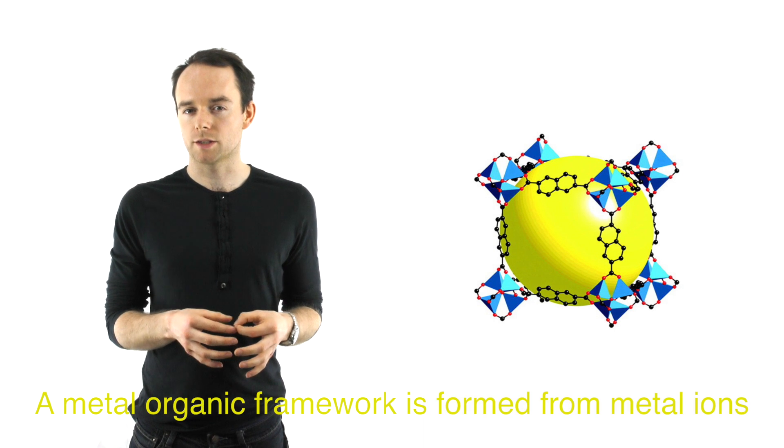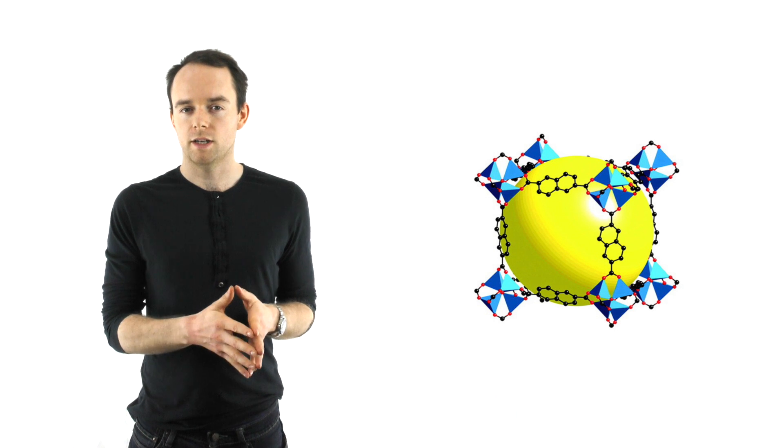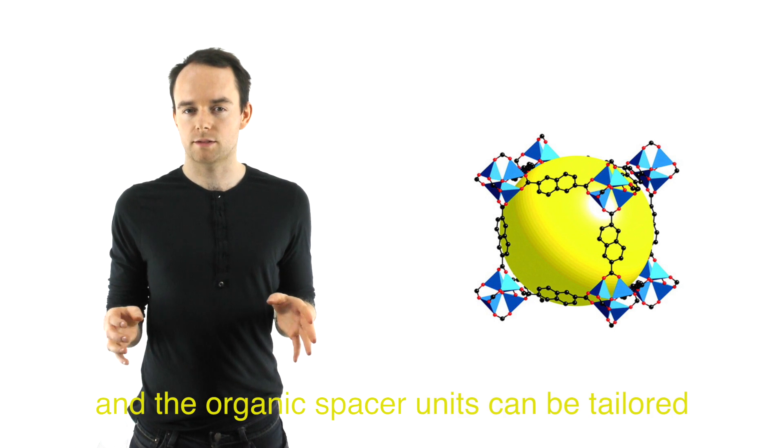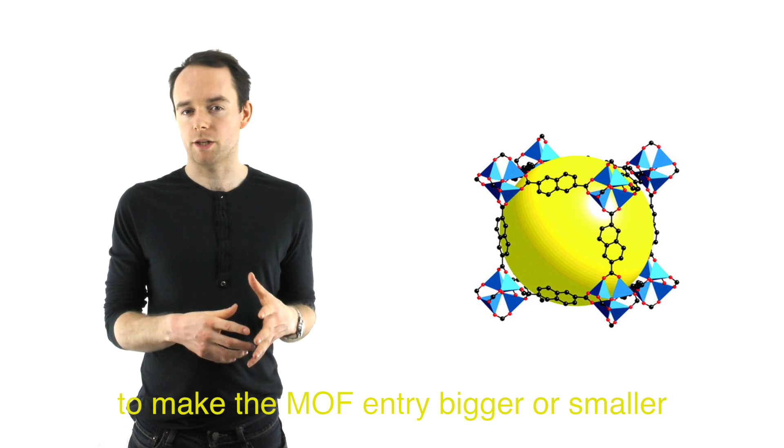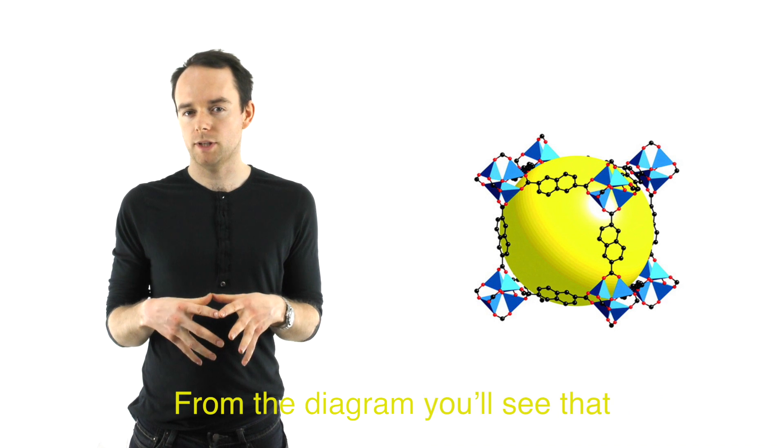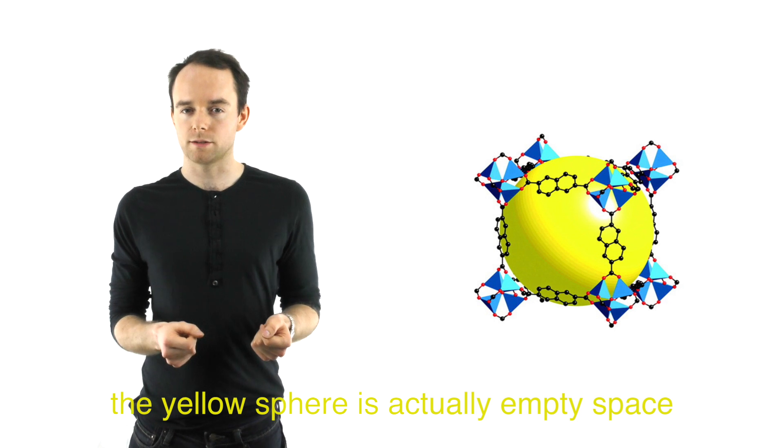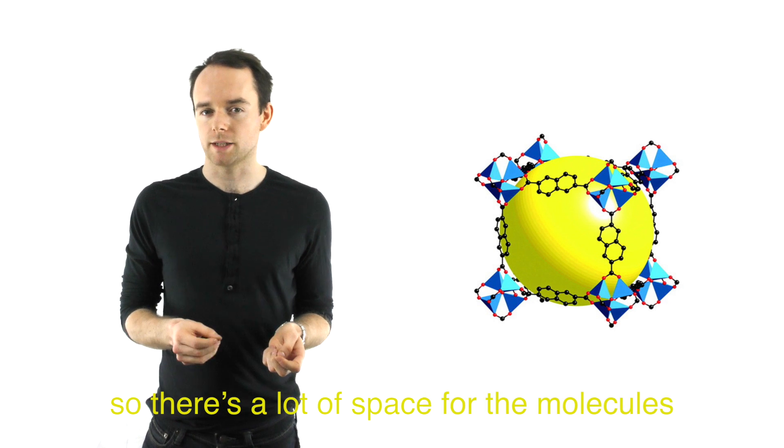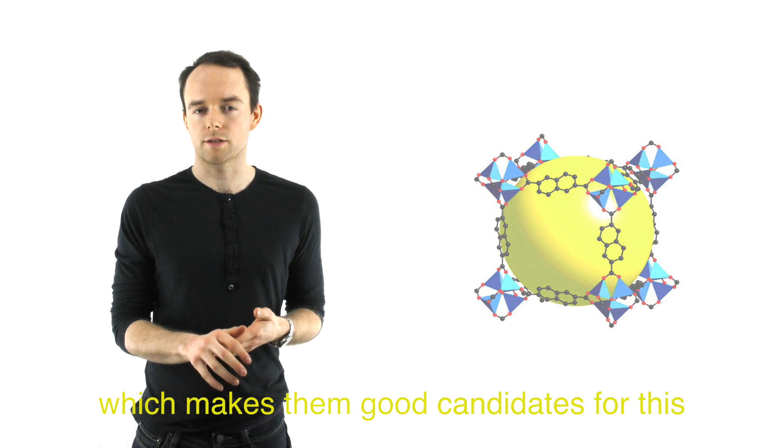A metal organic framework is formed from metal ions and organic spacer units, and the organic spacer units can be tailored to make the MOF entry bigger or smaller. From the diagram you'll see that the yellow sphere is actually empty space. There's a lot of space for the molecules to be absorbed into, which makes them good candidates for this.